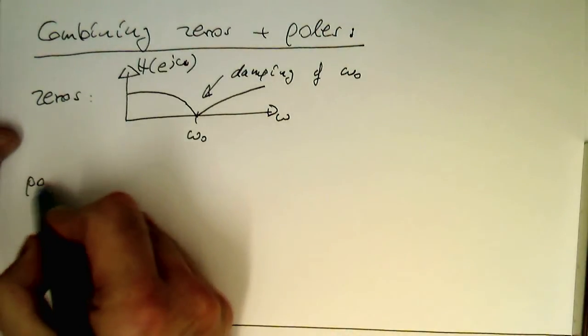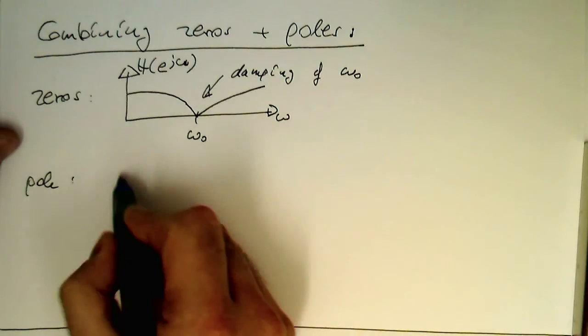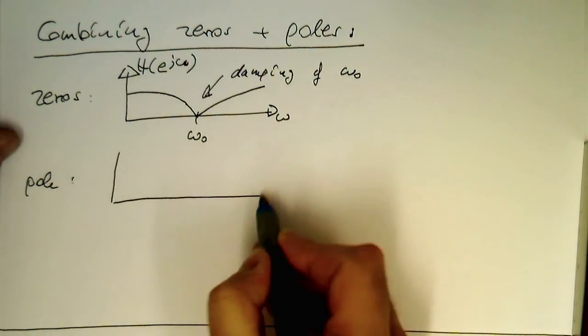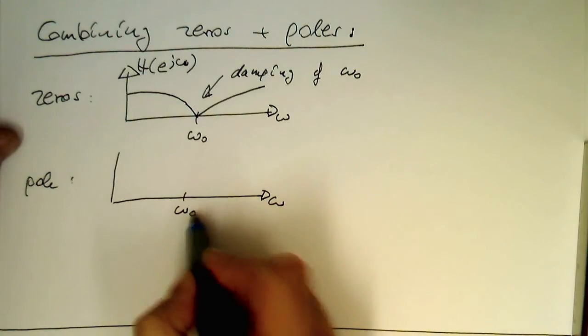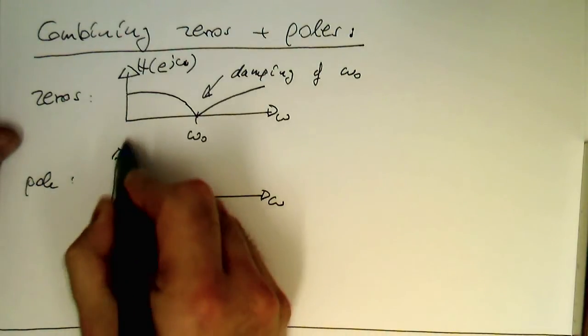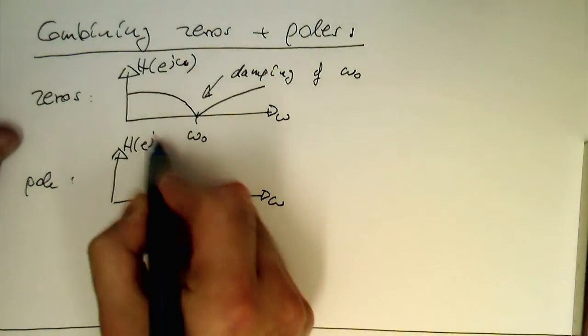And so the pole, on the other hand, does the opposite. So if we have here omega, and again we have got omega zero here. e to j omega.